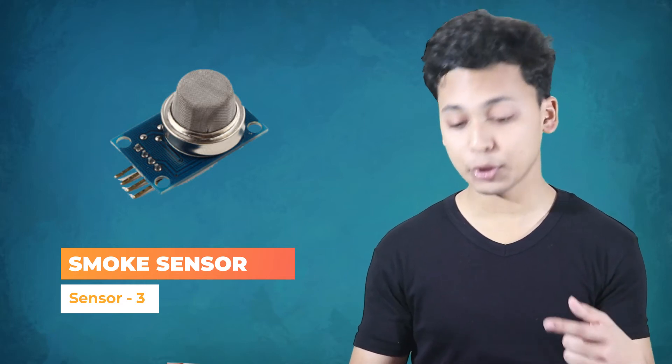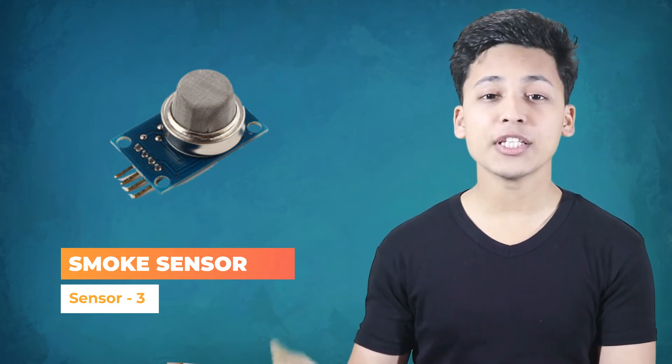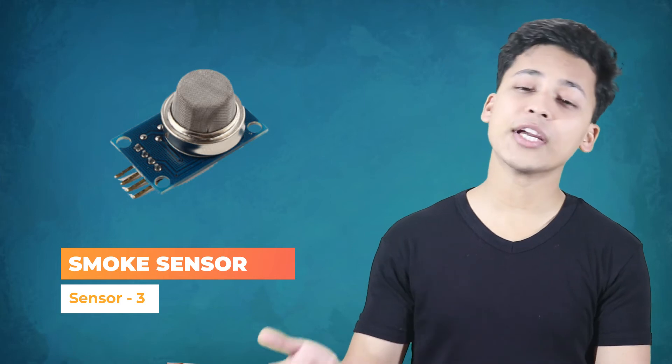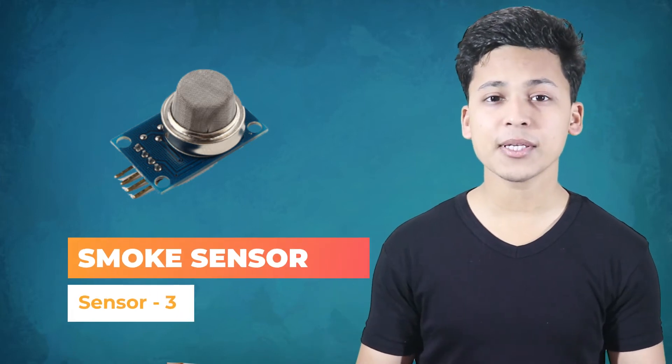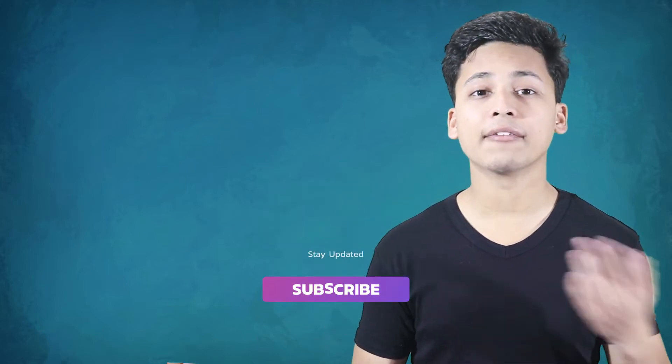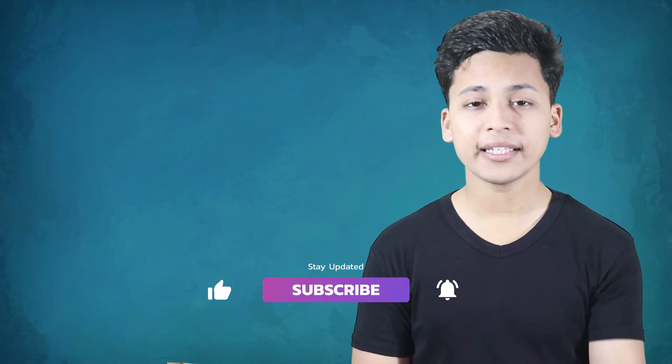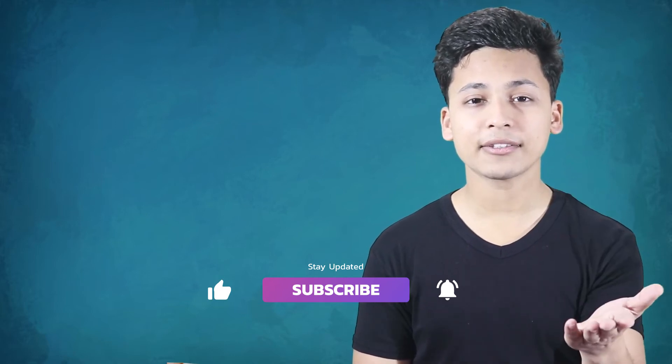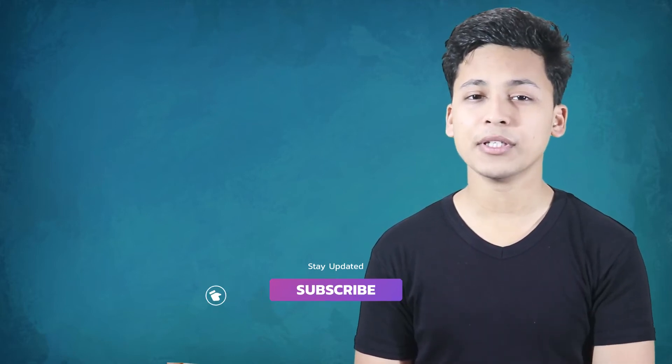The third sensor is the smoke sensor, also called the MQ2 gas sensor. You can use this sensor to create a fire alarm-based system whenever there is any gas leakage. This sensor can detect many types of gases — some to name are LPG, 1-butane, propane, methane, alcohol, hydrogen, and of course smoke. Fire detection is one of the best projects you can make with this sensor.